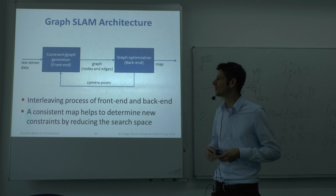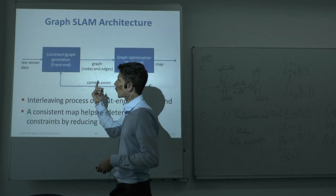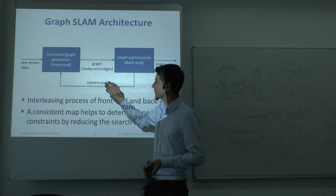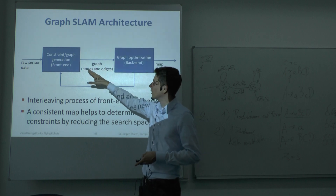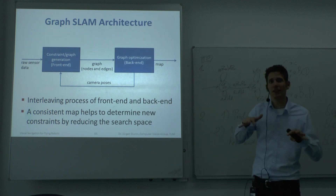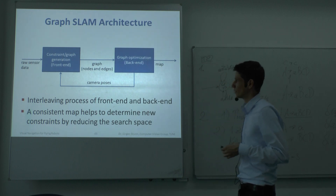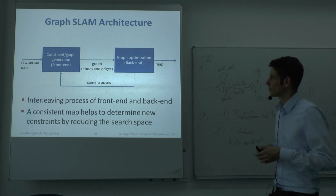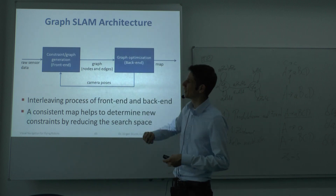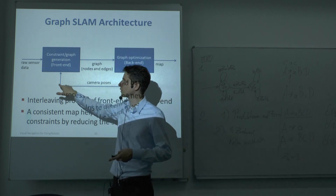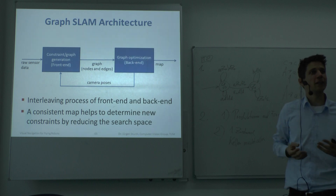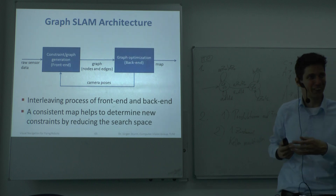It makes sense to structure SLAM into two components: a front end that takes raw sensor data and computes motion estimates, producing constraints between camera poses; and a back end that maintains the graph and shifts camera poses until all constraints are satisfied equally. Running the front end first and then the back end is possible, but having a good map helps find good correspondences. For example, for visual place search, knowing the map tells you which candidates to check in your local vicinity first.